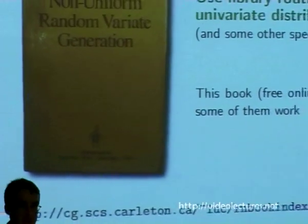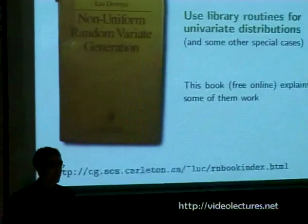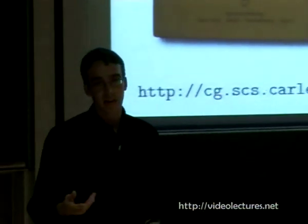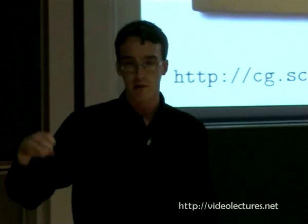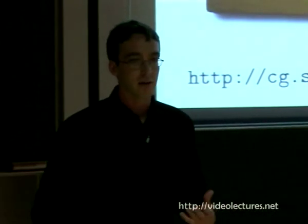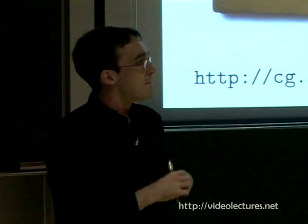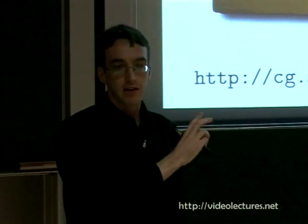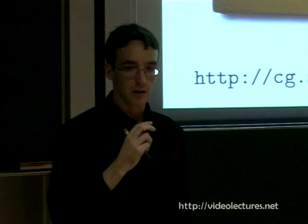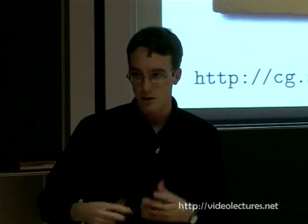How do we actually implement this ancestral pass and draw all these variables? The short answer is we just use MATLAB or whatever our computing environment provides, because it will already have implemented a lot of standard distributions. Drawing from the prior is going to be simple. If your library didn't provide these functions, there's a good book you can download that explains how a lot of these algorithms work under the hood. We're going to have to understand how a couple of these library routines actually work, because that's going to tell us how to improve on them.